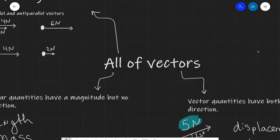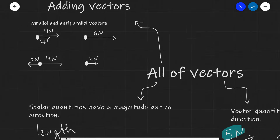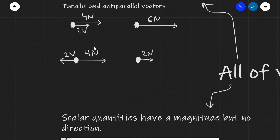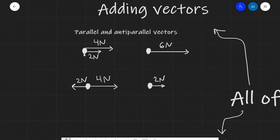Now that we've looked at the difference between scalar and vector quantities, let's have a look at some simple cases for adding vectors. If the two vectors are parallel or anti-parallel, we simply add the two quantities if they're in the same direction. For instance, a four newton force and a two newton force both acting to the right give a resultant force of six newtons to the right. If they were acting in opposite directions, we would subtract, leaving us with a resultant force of two newtons to the right.